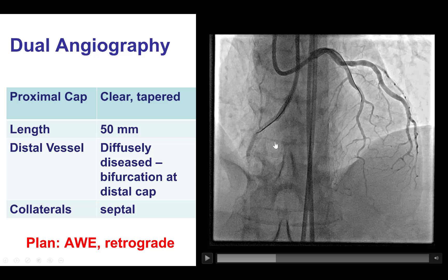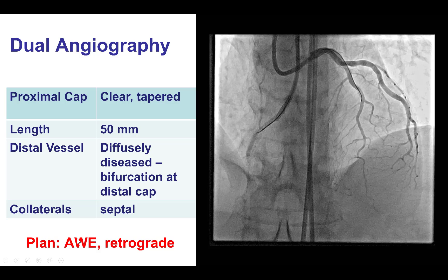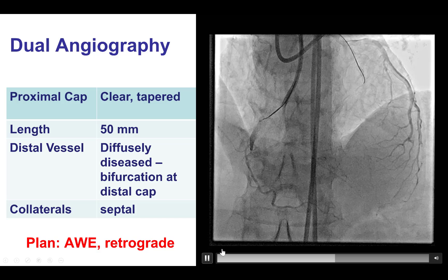Based on these characteristics, our plan was to first try antegrade wiring, and if that failed, switch to retrograde. ADR was not an appealing option because there was a stent in the distal RCA that could make re-entry very challenging.